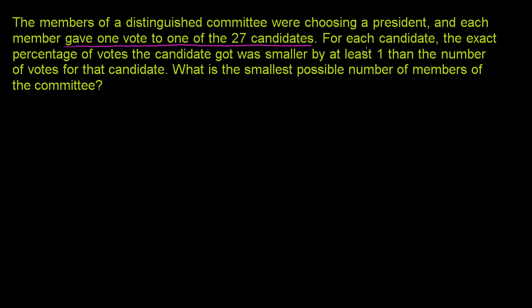For each candidate, the exact percentage of votes the candidate got was smaller by at least one than the number of votes for that candidate. Let me underline and read this again — it's a confusing statement. For each candidate, the exact percentage of votes the candidate got was smaller by at least one than the number of votes for that candidate.